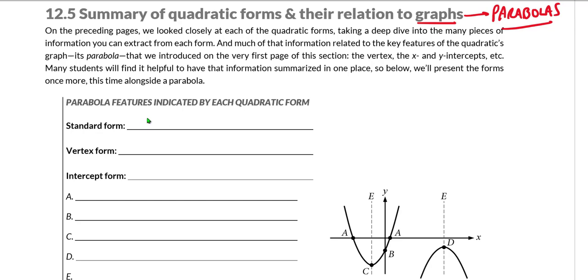Once again, standard form - I'm going to write y here, although remember y could be written as f(x). y equals ax squared plus bx plus c is standard form. Vertex form, we are going to do y equals a(x minus h) squared plus k. And for intercept form, we are going to do y equals a times (x minus p) and (x minus q). So those are the three forms.